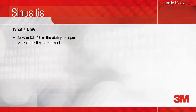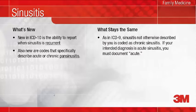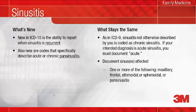New in ICD-10 is the ability to report when sinusitis is recurrent. Also, new codes that specifically describe acute or chronic pan-sinusitis. What stays the same? As in ICD-9, sinusitis not otherwise described in the medical record is coded as chronic sinusitis. So if your intended diagnosis is acute sinusitis, you must document acute. You should also document which specific sinus or sinuses are affected, because unique codes are reported for maxillary, frontal, ethmoidal, and sphenoidal. When your diagnosis is acute or chronic pan-sinusitis, a code can be assigned that says exactly that.